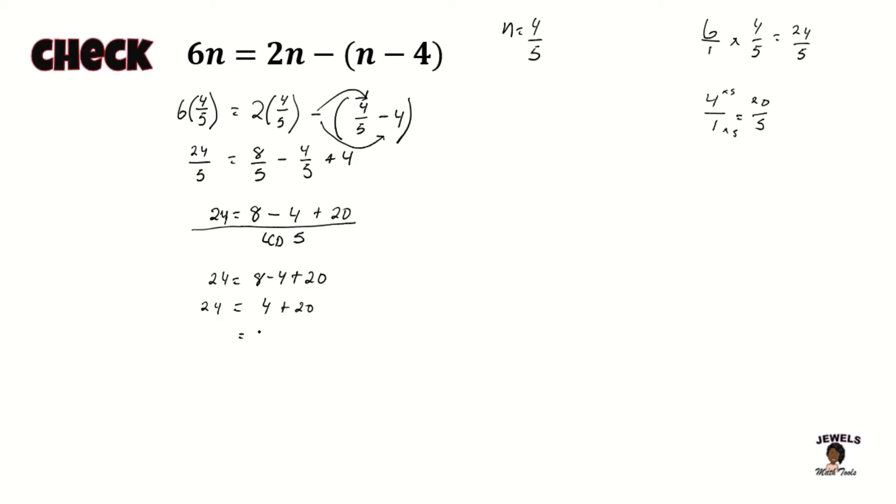So we see that both sides of our equation are equal to 24, which means again, my n equals to 4 fifths is the correct answer for our equation. So remember that whenever you have these fractional answers to always practice solving these equations, plug in your fractions and get started.